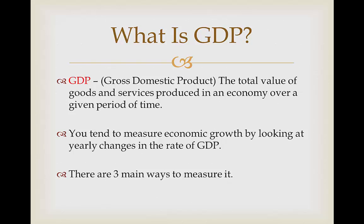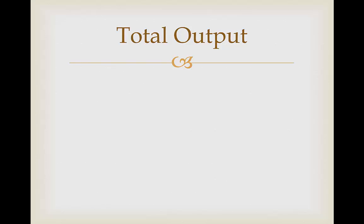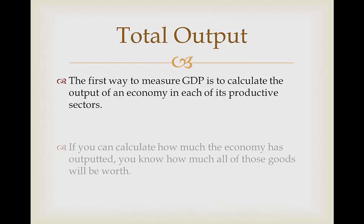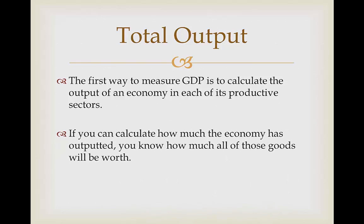There are three ways in which we can measure GDP. The first is total output in an economy. GDP is calculated by the amount of output an economy is able to produce in each of its productive sectors every year. If you can calculate how much the economy has outputted, we know the value of all of these goods and services produced by our economy.